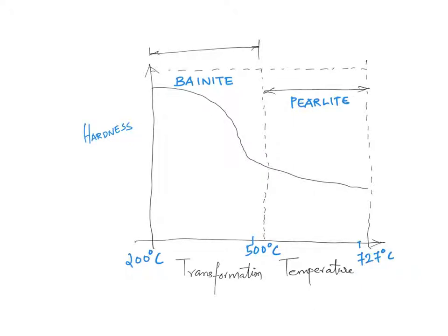Then you can see we are getting bainite only when the transformation temperature is below 550 degrees Celsius approximately. We won't get bainite at temperatures higher than 550 degrees Celsius. I hope you remember the concepts which I have explained in the video titled isothermal transformation diagrams.